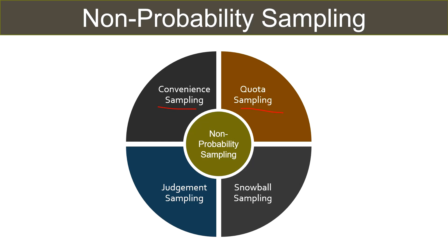It must be noted that to choose quota sampling, the researcher must have an idea of the characteristics of the target population. Snowball sampling: the researcher identifies one member from the population, interviews him, and then asks him to identify others in the population so that the researcher can speak to them too. After the first selection, other respondents are selected by way of referrals, and referrals are obtained from the chosen referrals.